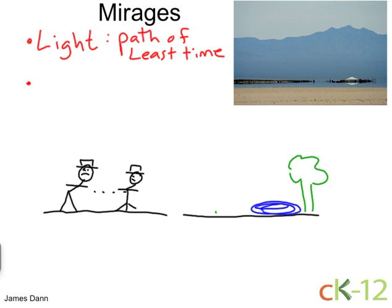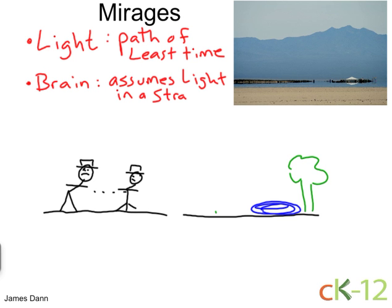The other thing that's going on is that our brain — the human brain — assumes, or I should say interprets, light in a straight, straight line path.